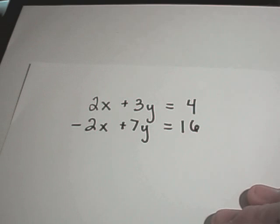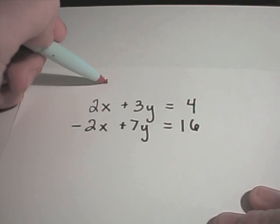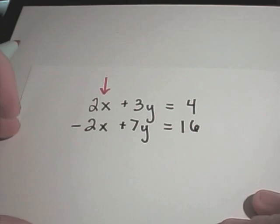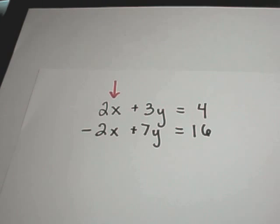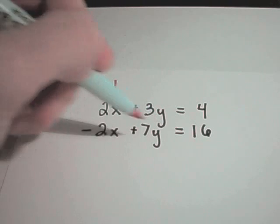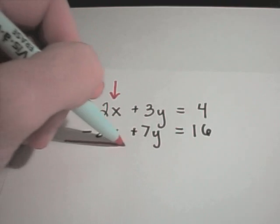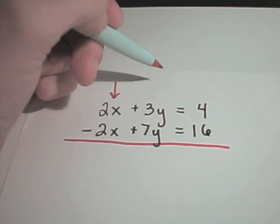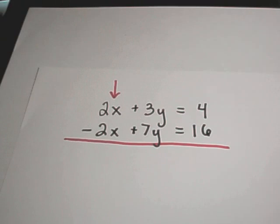So the idea is, what you want to do is, you want to basically eliminate a variable by doing addition. Or equivalently, you could do subtraction. Notice here that I've got a positive 2x and a negative 2x here at the beginning. And what I'm going to do is, I'm just going to think about everything. Notice, everything's lined up. I've got my x's, I've got my y's, I've got my numbers. I'm just going to simply add up everything in each column.